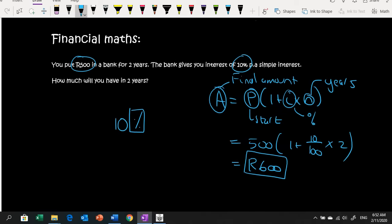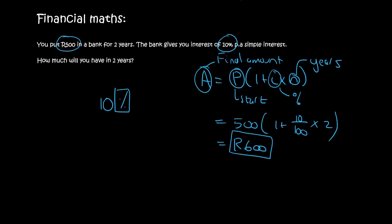So, this formula gives you the final answer and you don't have to go add the interest or anything like that. Just be careful though. You started with 500 Rand. It becomes 600 Rand. So, how much did you actually earn?